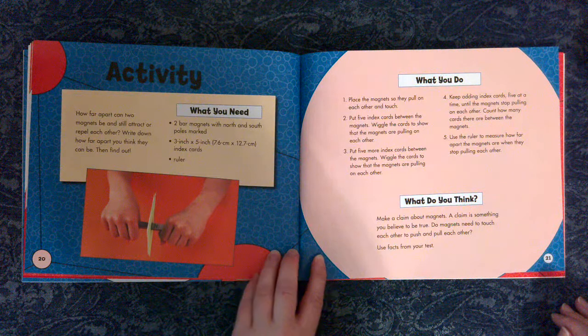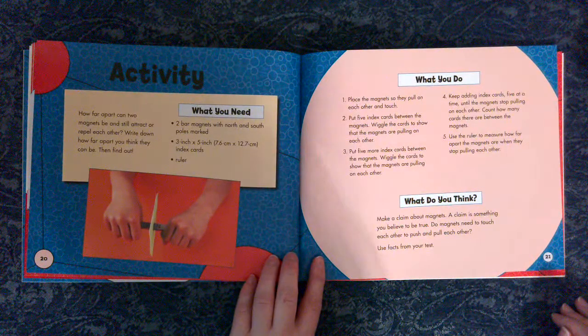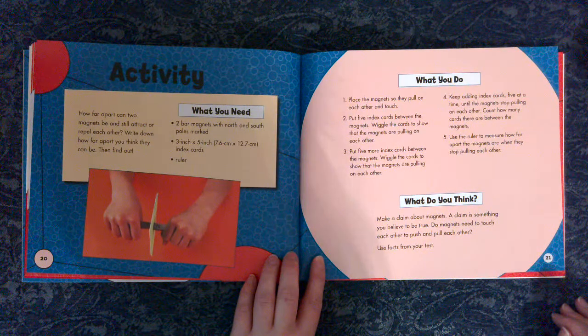What you do. 1. Place the magnets so they pull on each other and touch. 2. Put five index cards between the magnets. Wiggle the cards to show that the magnets are pulling on each other.